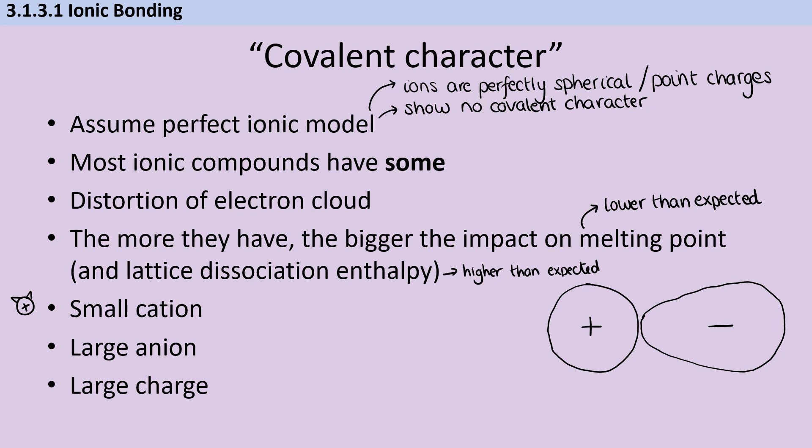And then finally, having a larger charge on either ion. So as I mentioned, aluminum oxide is kind of one of the poster girls for ionic compounds with covalent character. And part of that is the fact that we have this 3+ charge on the aluminum. So you have a very large charge and that means stronger electrostatic attraction and therefore more polarization.